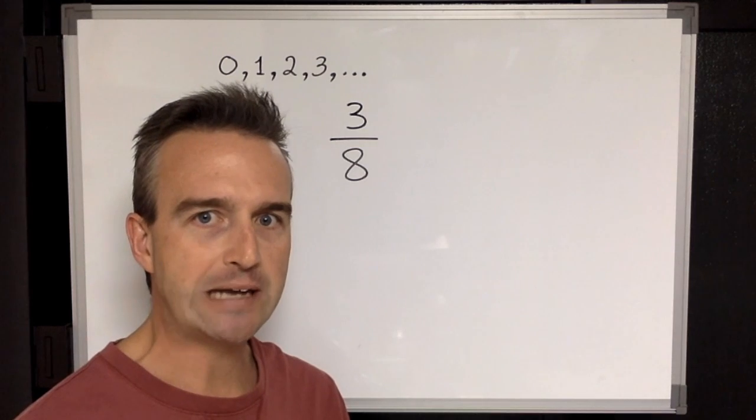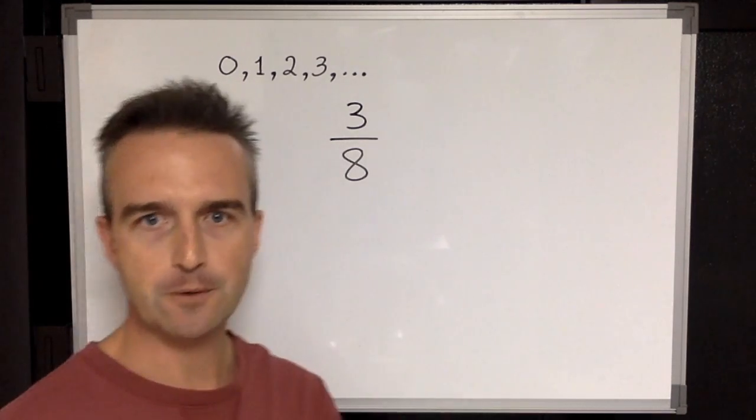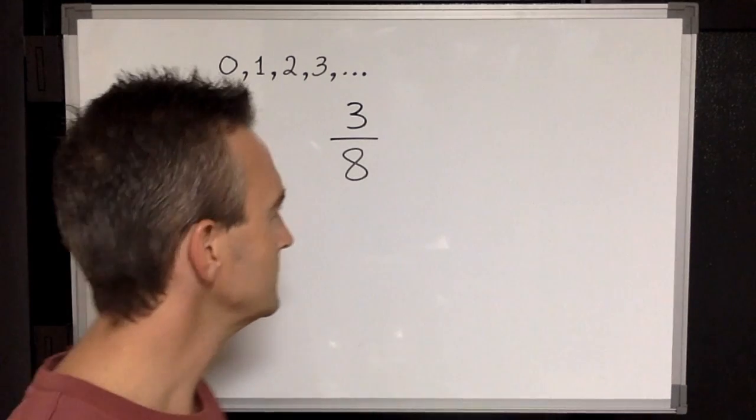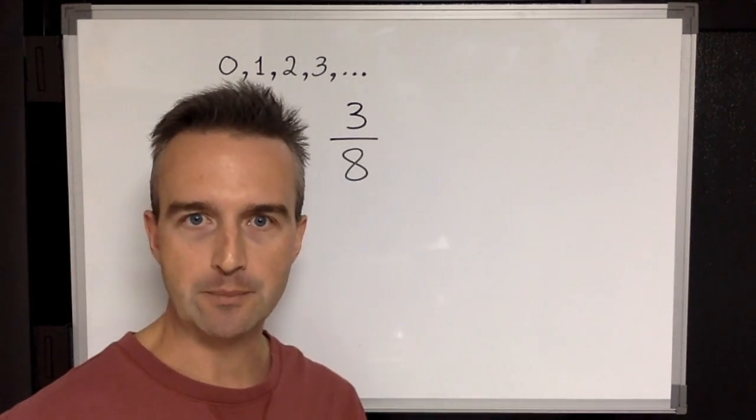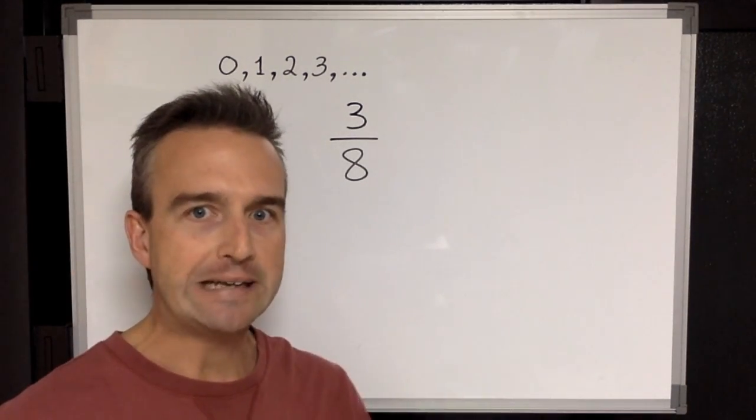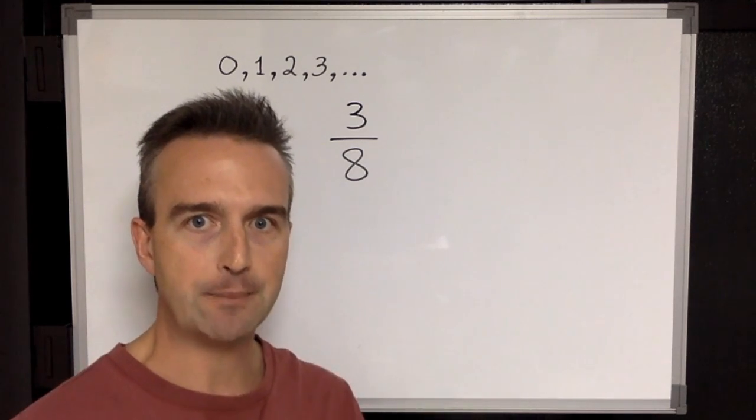But in some languages we actually read it bottom to top, which kind of makes a little bit more sense. The denominator, the number on the bottom, tells us how many equal pieces the whole amount has been cut up into.